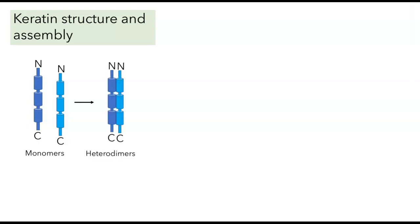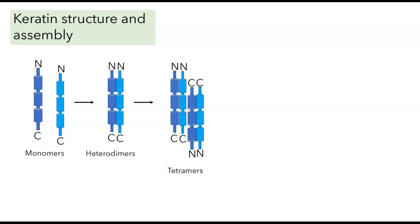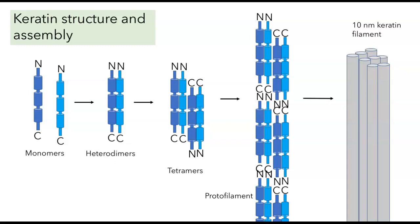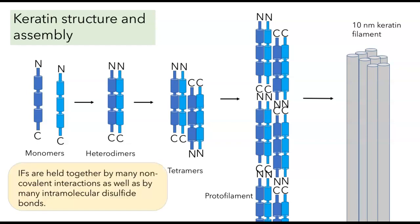Initially, monomers join together to form heterodimers. Those heterodimers join together to form tetramers. The tetramers join end-to-end to make structures called protofilaments. And then if we have eight of those protofilaments — each cylinder representing one protofilament — altogether that gives us the 10 nanometer keratin filament. The different subunits are held together by many non-covalent interactions as well as by intramolecular disulfide bonds, and that's what makes it very stable.